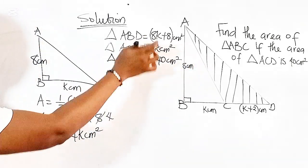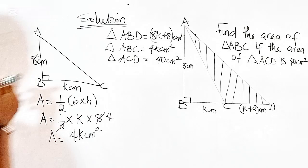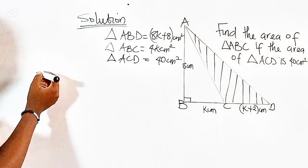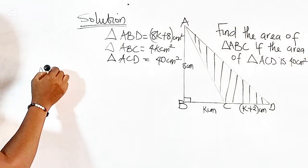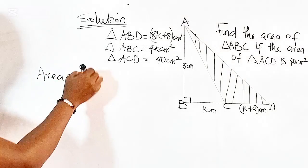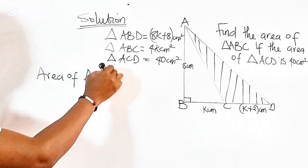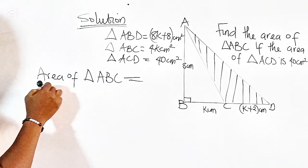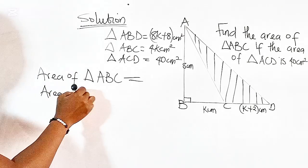Since these two have the variable K, we can conveniently find the area of triangle ABC in the form of an equation. So therefore, the area of triangle ABC is equal to the area of the bigger triangle, which is triangle ABD